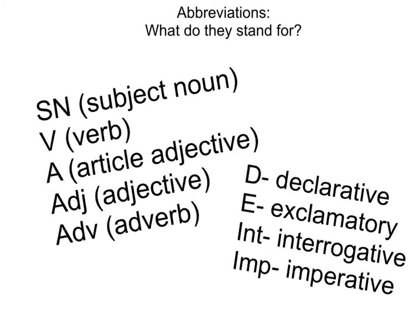Then we have article adjectives. We just label those with a capital letter A. Those are words that you just need to learn — they are: the, a, and an. There are no questions to go along with them. You just need to know and recognize these within the sentence.